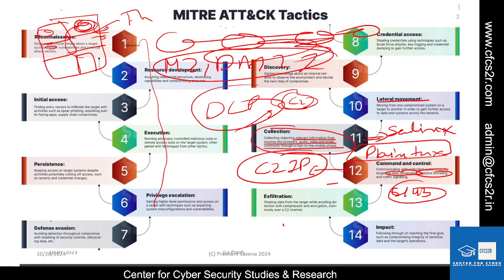Attackers can use different protocols such as application-layer protocols like HTTP, HTTPS, DNS, and SMTP. They can conceal malicious traffic within secure web traffic. They can also use protocol tunneling — sending data through DNS or ICMP packets — and encrypted channels like TLS and SSL. Remote access software and non-standard ports like 8080 and 4431 can also be used to send data.